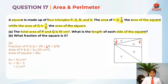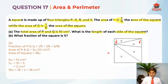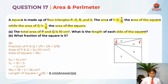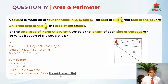They're asking us what is the length of each side of the square, so we can find the area of the whole square and then square root it. The area of the square is 18 units, so 18 times 2 equals 36 cm². Now I'm just going to square root it, which gives 6 cm. So 6 cm is the answer for Part A.